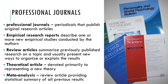Review articles, on the other hand, summarize previously published research on a topic and usually present new ways to organize or explain the results. When a review article is devoted primarily to presenting a theory, it is often referred to as a theoretical article. When a review article provides a statistical summary of all previous results, it is referred to as a meta-analysis.